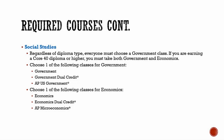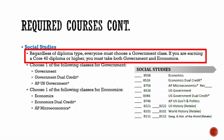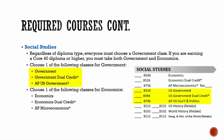Now let's move on to social studies. Everyone, regardless of diploma type, must choose a government class. Options for government include regular government, government dual credit, or AP government. If you are earning a Core 40 diploma or higher, you must take both government and economics. Options for economics include regular economics, economics dual credit, and AP microeconomics.